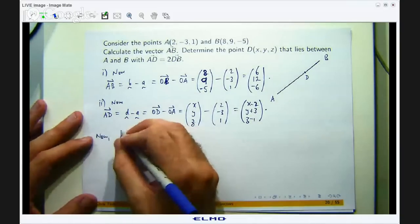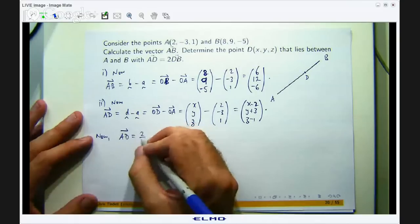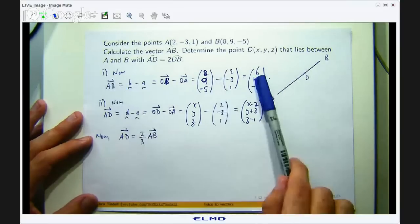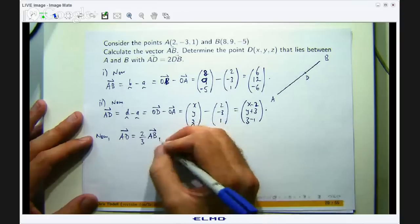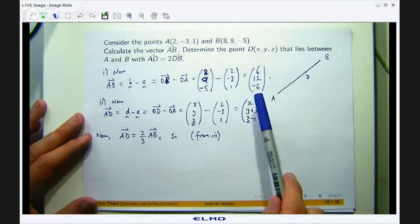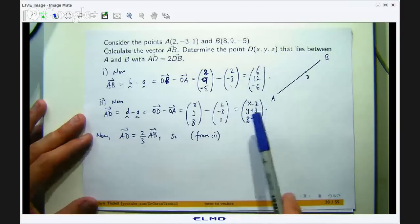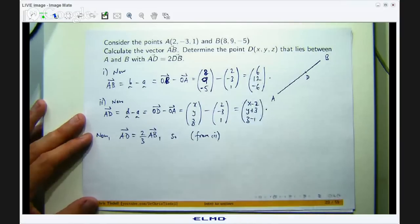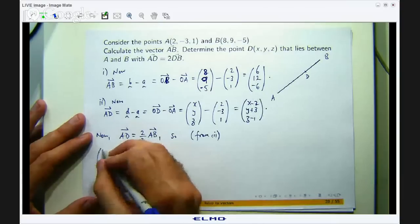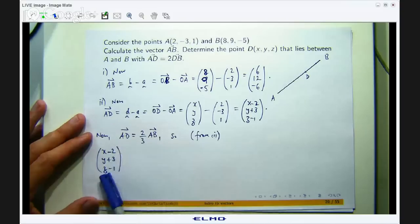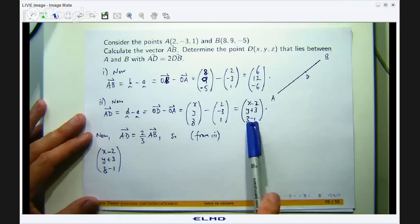Now AD is just 2 thirds of the vector AB. Now in part I, I have already worked out the vector AB. So from I, what we need to do is just write this equation in terms of these column vectors. So that is going to be 2 thirds of that. I know my Z's look a little bit like 3's but I apologize, that is a Z, that is a 3, that is a Z, that is a 3.